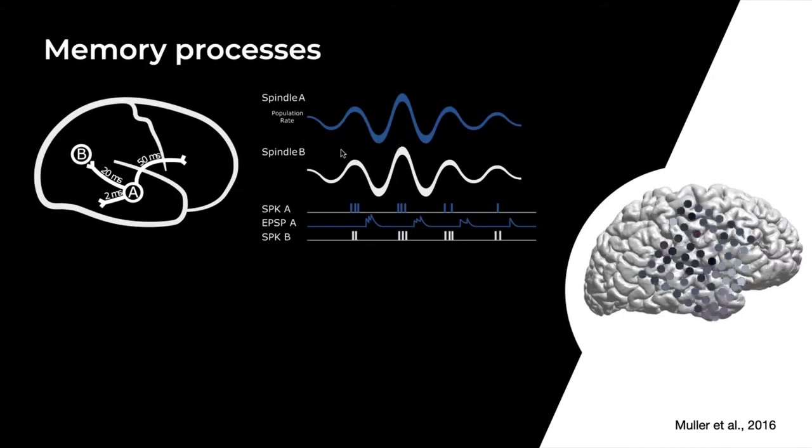If the sleep spindles, the population activity in both regions are synchronized, as indicated by the graph here, then the spikes, which are usually locked to the more excitable state of spindles, would occur simultaneously.